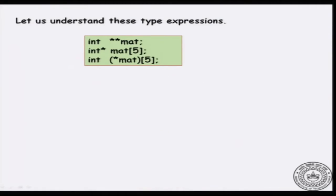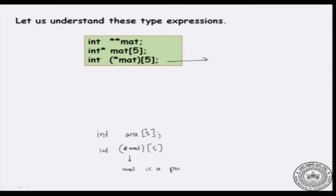In this video, we will look at one expression in particular: the third one, which is int *mat[5]. If I had written int array[5], this means that array is an integer array of size 5. Similarly, I can read this as: star mat is an integer array of size 5. In other words, mat is a pointer to an array of ints of size 5.